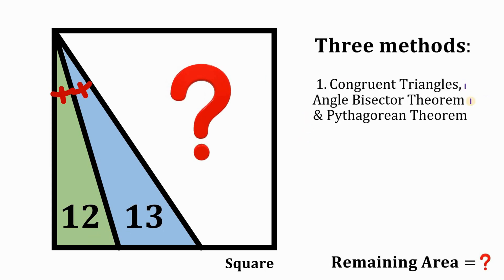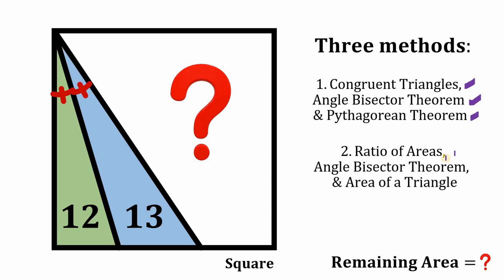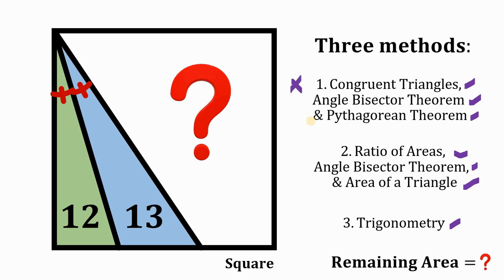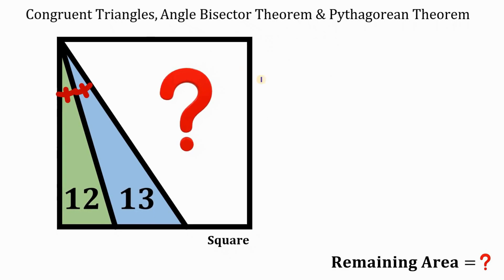The first method uses congruent triangles, the angle bisector theorem, the Pythagorean theorem, and the area of a triangle. The second method uses the ratio of areas, the angle bisector theorem, and the area of the triangle. The third and shortest solution uses trigonometry. Let's begin with our first method.